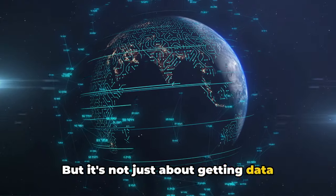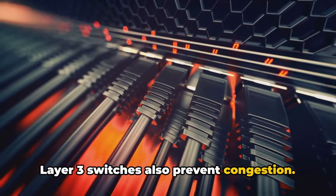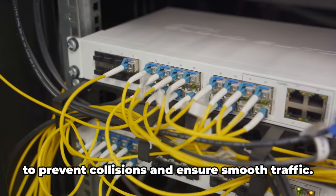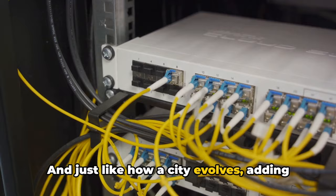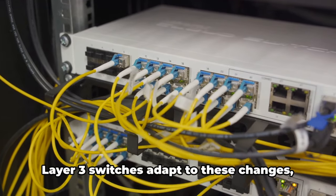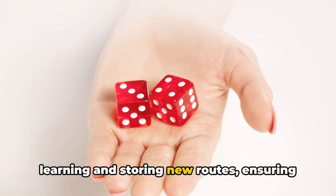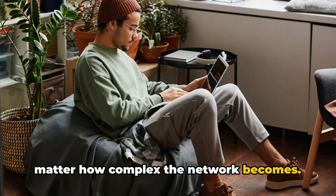But it's not just about getting data packets to their destination. Layer 3 switches also prevent congestion. They're like the traffic lights at a busy intersection, regulating the flow of data to prevent collisions and ensure smooth traffic. And just like how a city evolves adding new roads and intersections, a network also grows and changes. Layer 3 switches adapt to these changes, learning and storing new routes, ensuring that the digital traffic keeps moving no matter how complex the network becomes.